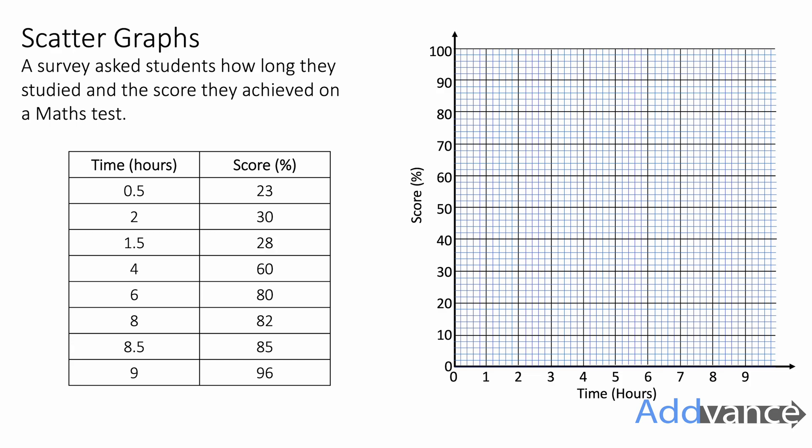I've drawn a scatter graph here and it's got time across the bottom and the score across the y-axis. You always have to label your x and y axis with the scale and also what you are measuring.